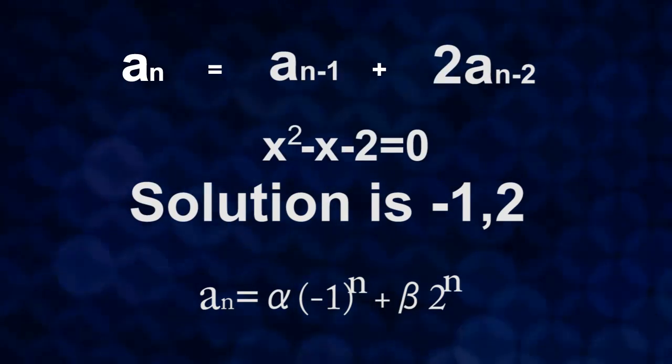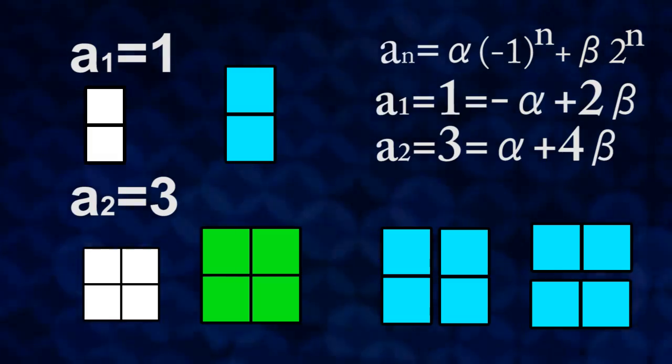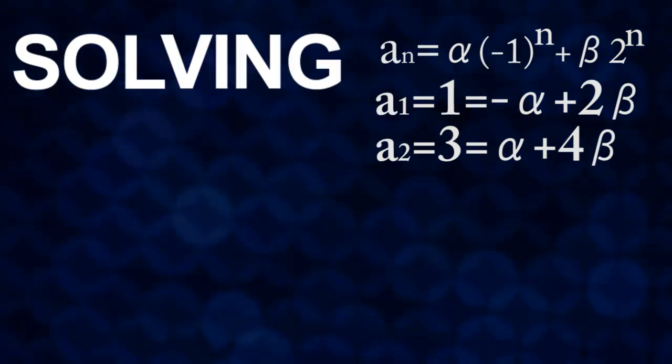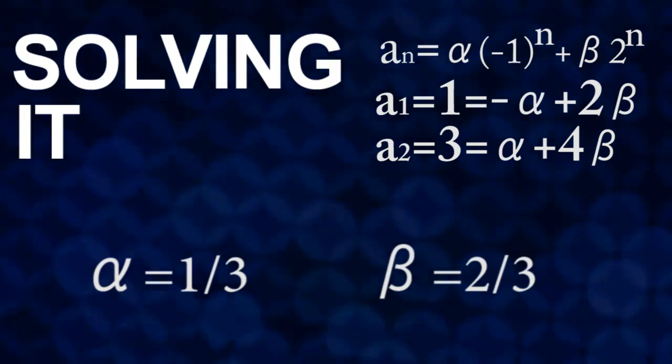Then it becomes that a n is equal to this. And by substituting initial value, we can get two equations based on alpha and beta. And by solving it, alpha is equal to 1 third and beta is equal to 2 third. And therefore, we can get a general solution of this recurrence formula which is this.